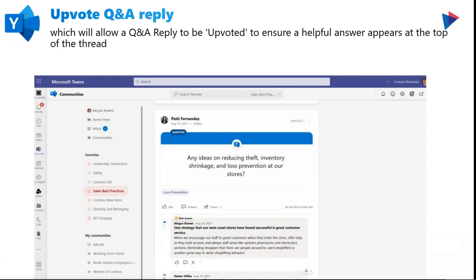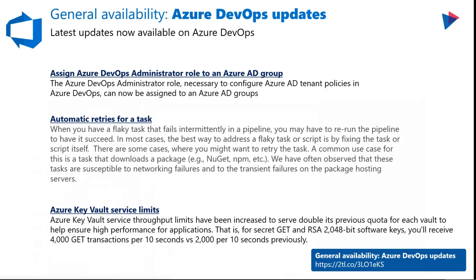In the world of Yammer, you now have the ability to allow a Q&A reply to be upvoted to ensure a helpful answer appears at the top of the thread. There were also some recent announcements for Azure DevOps updates. You can now copy a dashboard to a different team, the same team, or a different project. The team and query configuration is updated in the new dashboard, which minimizes the work required to build dashboards from scratch.